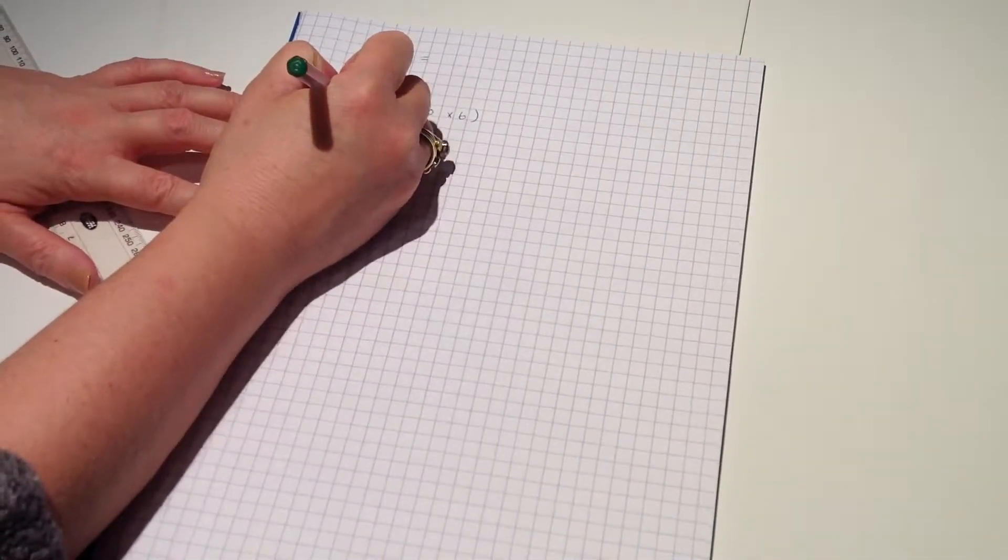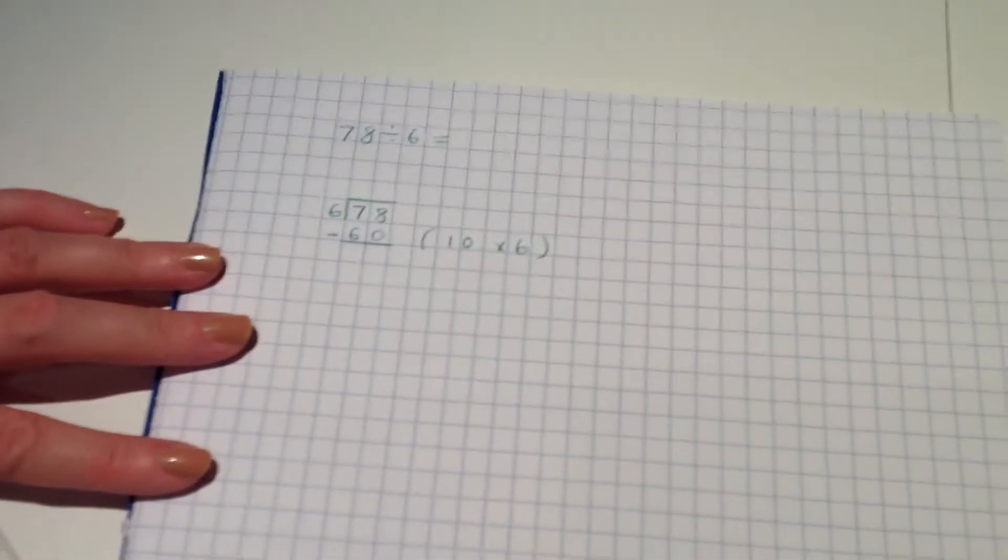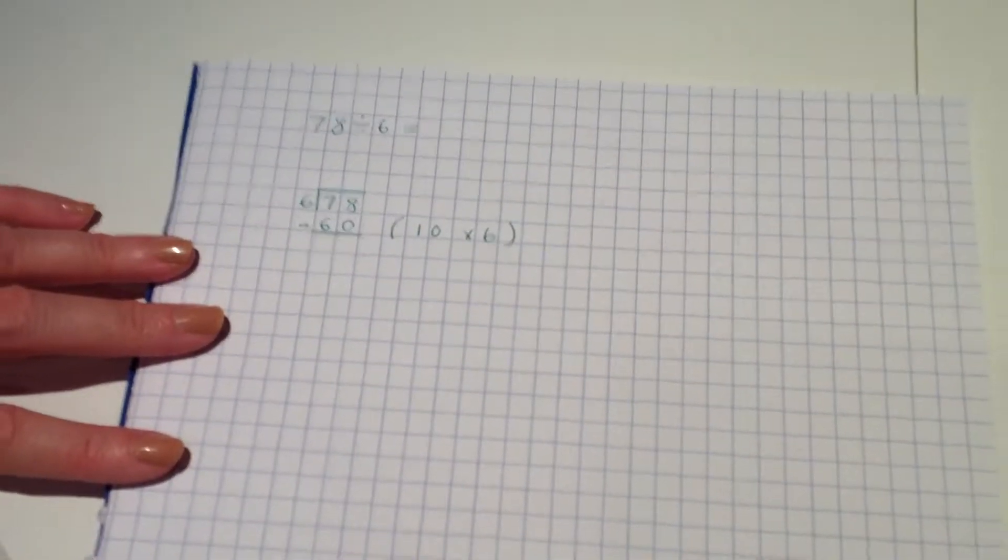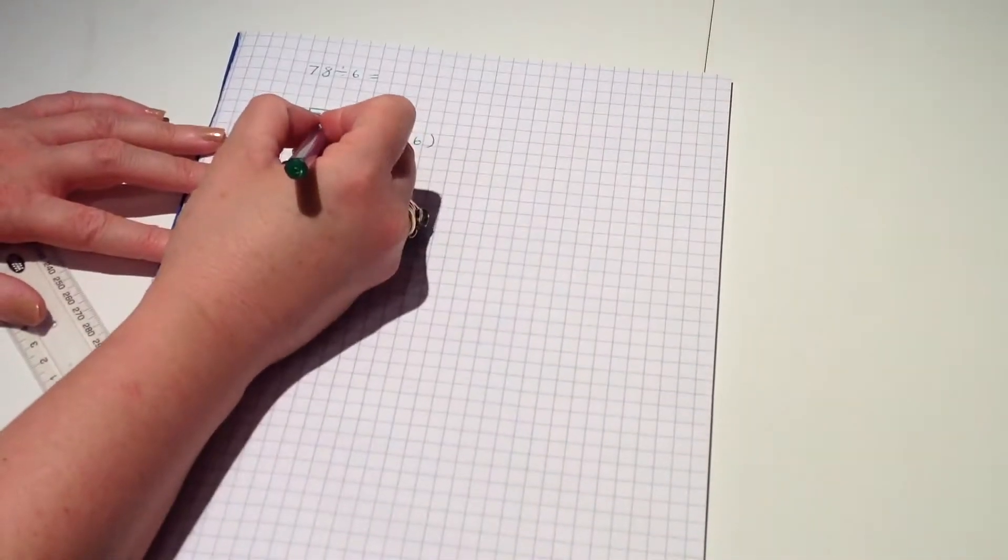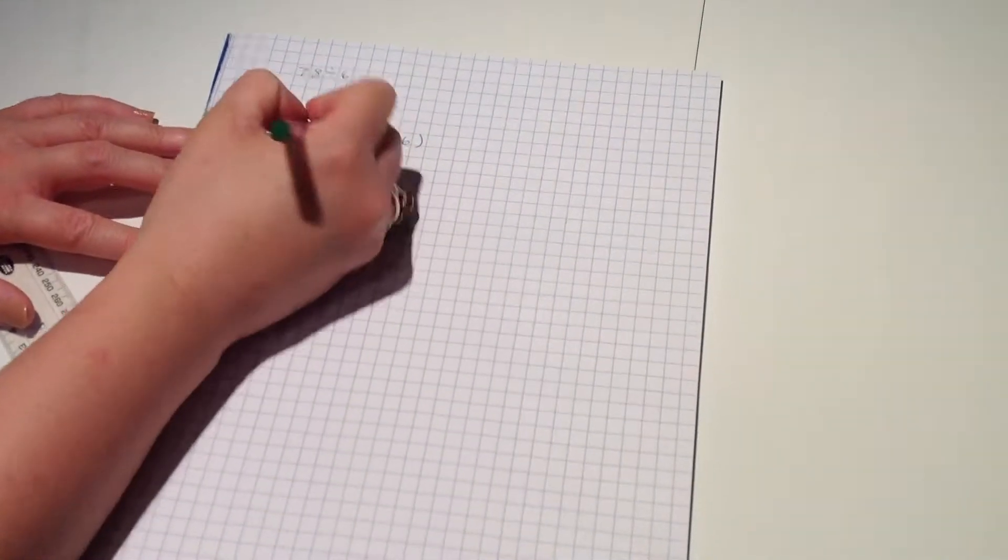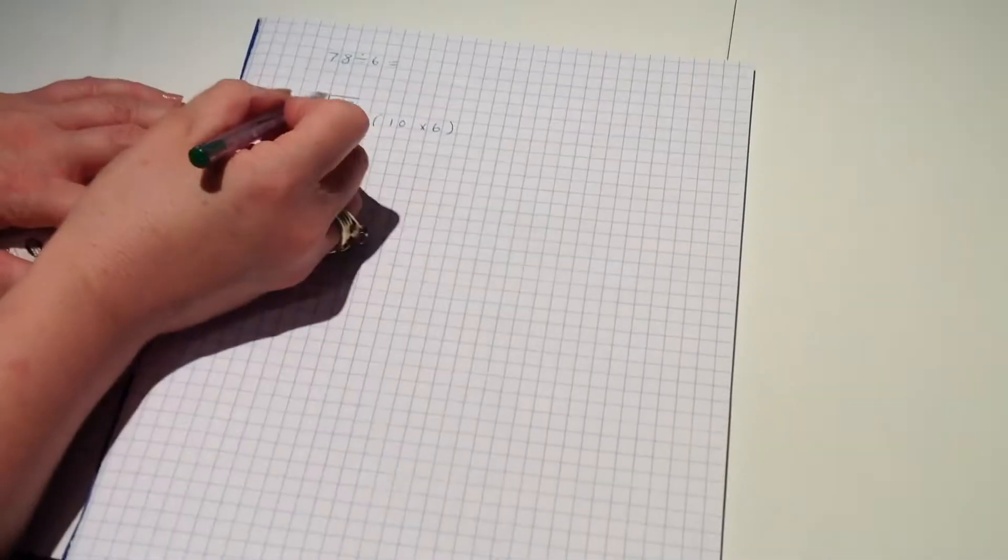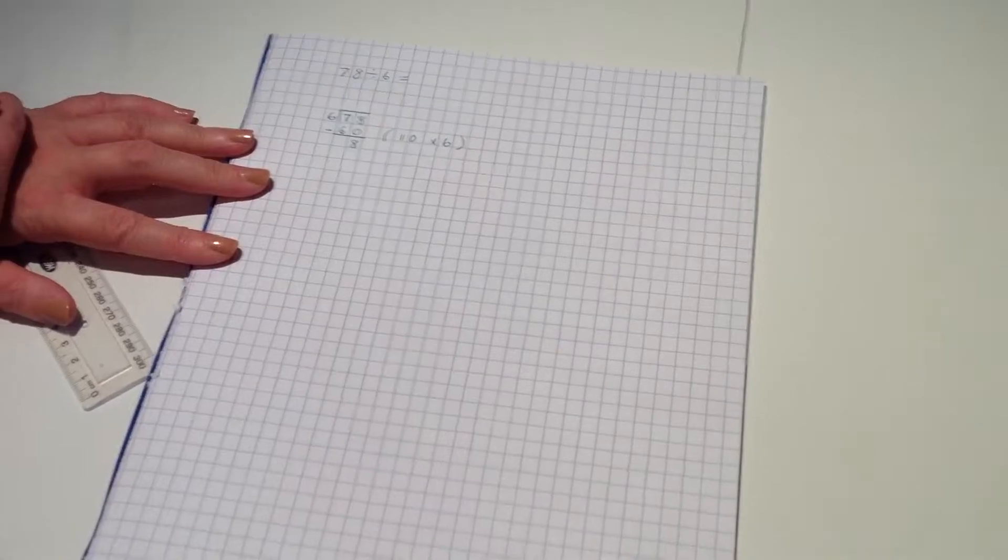Now, I know that there are ten groups of six hiding inside the number 60 because I know that ten lots of six is 60. So what I'm going to do is I'm going to note that 60 down here and I'm going to say that's ten groups of six.